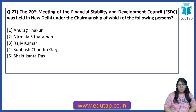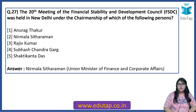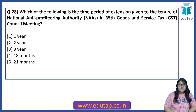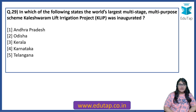The 20th meeting of the Financial Stability and Development Council was held in New Delhi under the chairmanship of which person? The answer is Nirmala Sitharaman, Union Minister of Finance and Corporate Affairs. What is the time period of extension given to the tenure of the National Anti-Profiteering Authority in the 35th GST Council meeting? The answer is 2 years.